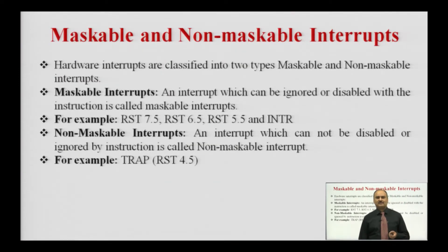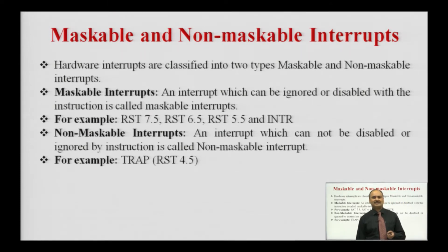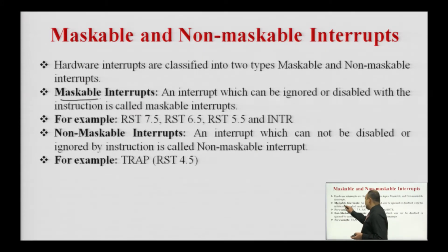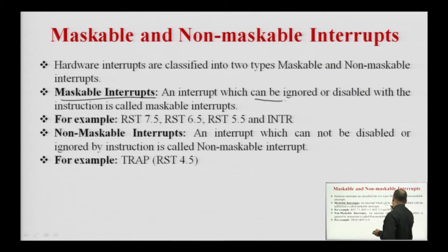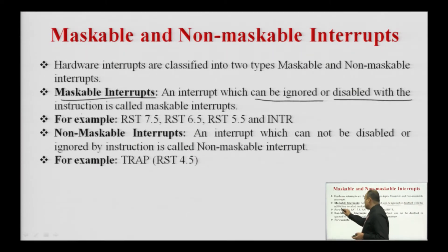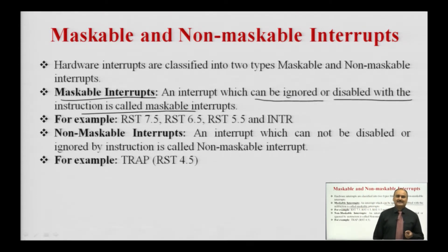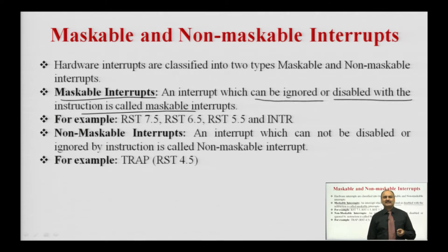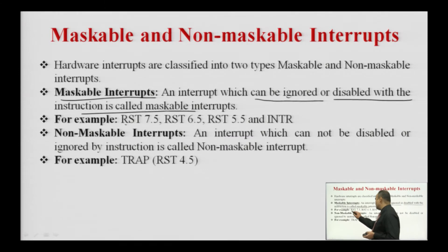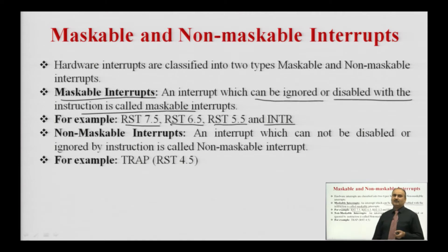Next are maskable and non-maskable interrupts. The hardware interrupts of the 8085 microprocessor are further classified as maskable and non-maskable interrupts. Maskable interrupts are interrupts which can be ignored or disabled with a software instruction. When the interrupt request can be ignored or disabled with a software instruction, it is called a maskable interrupt. In the 8085 microprocessor, the maskable interrupts are RST7.5, RST6.5, RST5.5, and INTR.